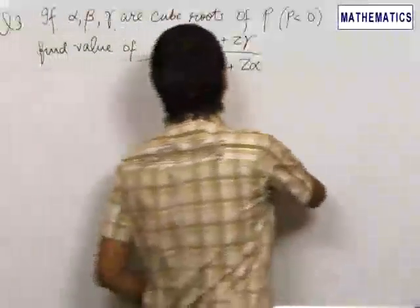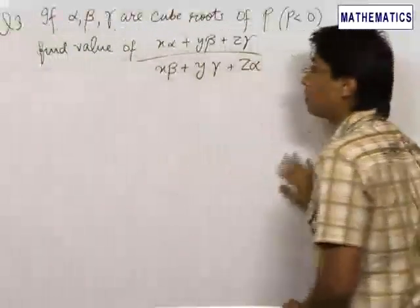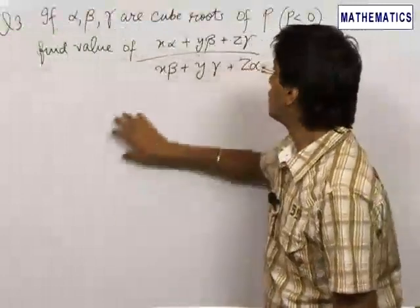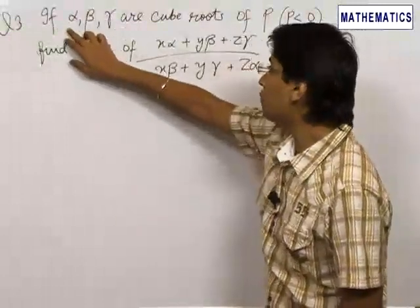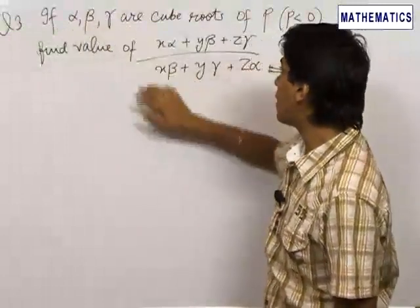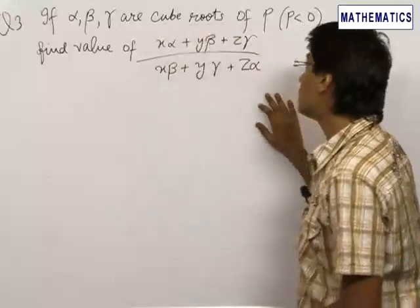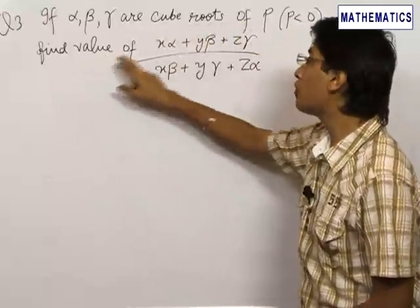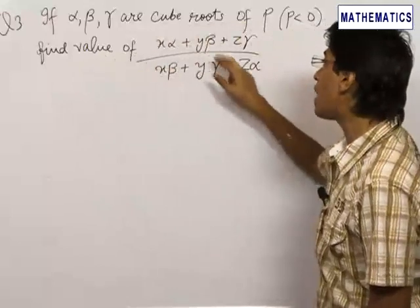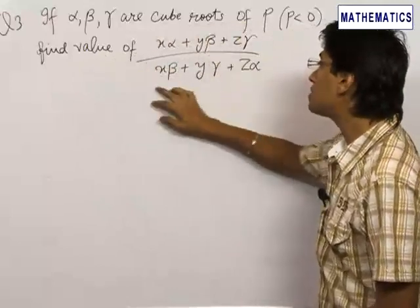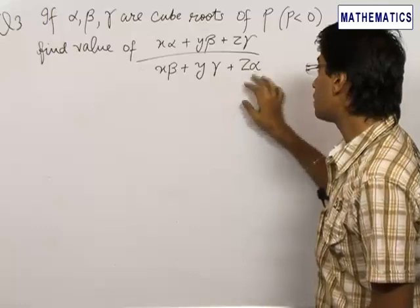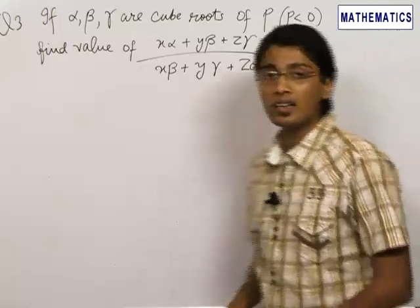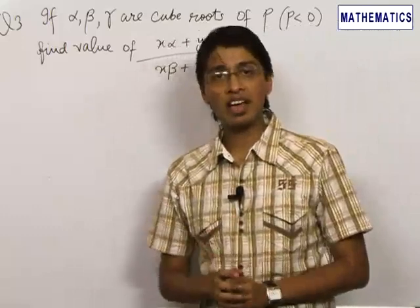The next problem involves the use of some tricks. We are given that alpha, beta and gamma are cube roots of p, where p is a negative number. We need to find the value of x·alpha + y·beta + z·gamma divided by x·beta + y·gamma + z·alpha, no matter what the values of x, y and z are.